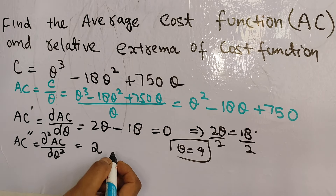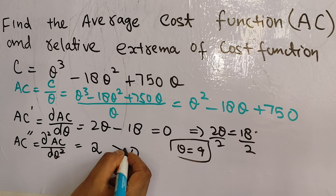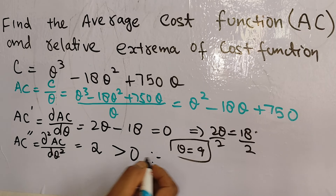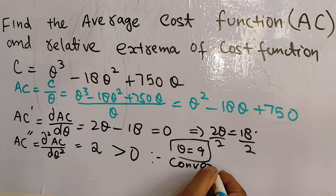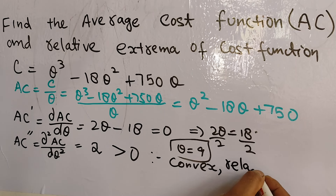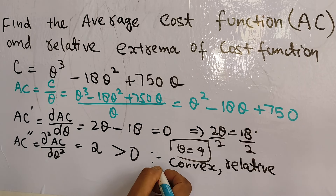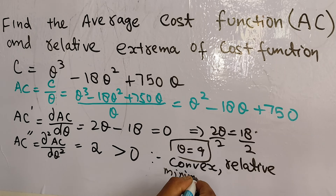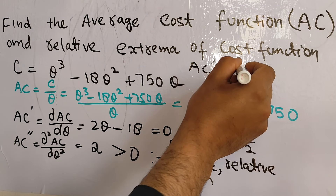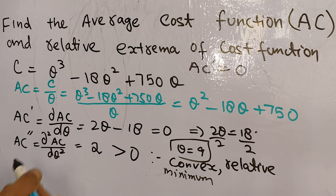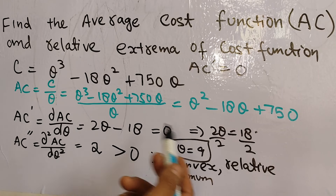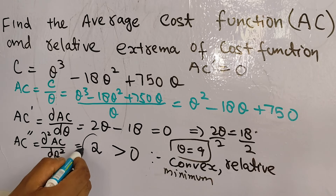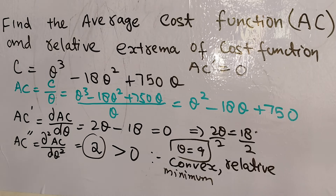Since the second derivative came out to be 2, which is greater than 0, we can say that the average cost function is convex, and we have a relative minimum at the critical point Q equal to 9. The condition is straightforward: take the first derivative, set it to 0 to get the critical point, then evaluate the second derivative at that point.